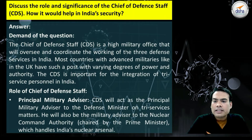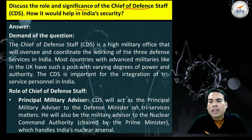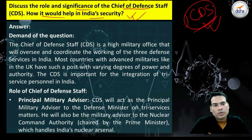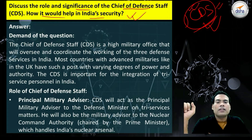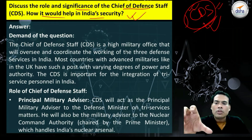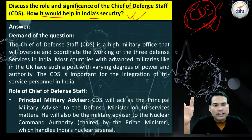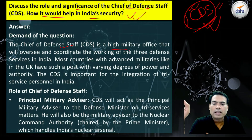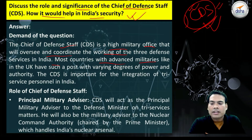The next question is: Discuss the role and significance of the Chief of Defence Staff. How would it help India's security? For a very long time, the demand for a CDS was running in India and it was finally approved. General Bipin Rawat was appointed as Chief of Defence Staff. The CDS is a high military office that will oversee and coordinate the working of the three defence services in India. Most countries with advanced militaries, like the UK, have such a post.